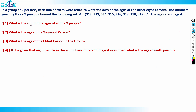So the set says that in a group of nine persons, each one of them were asked to write the sum of the ages of the other eight persons. The numbers given by those nine persons form the following set A = {312, 313, 314, 315, 316, 317, 318, 319}.